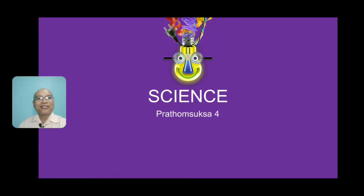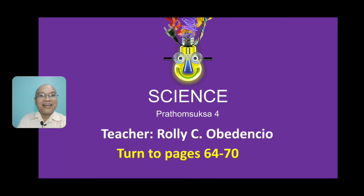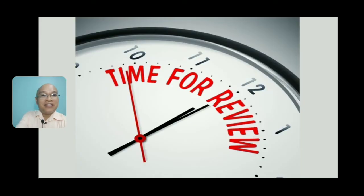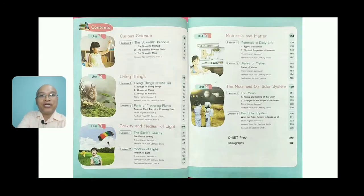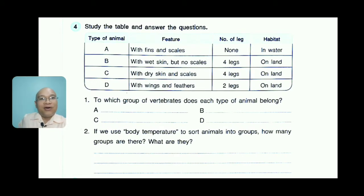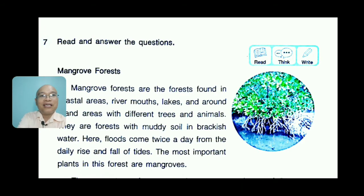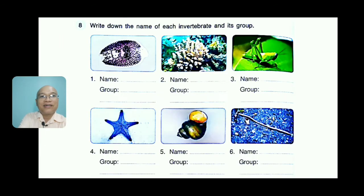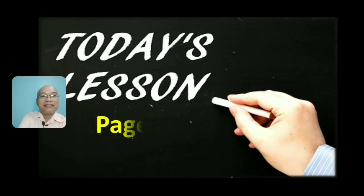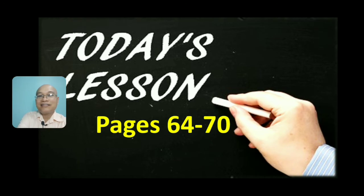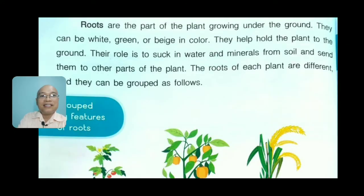Hello Grade 4 students! Are you ready to study science? Turn your book to pages 64 to 70. First, we will review before we go into the details of our lesson. I believe you did this one last time, so this is only a review. For today, our lesson is on pages 64 to 70 and we'll be talking about roots and stems.